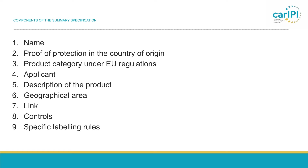There is a section on proof of protection in the country of origin, because international GIs always have to be protected already in the country of origin. Then the product category under EU regulations, the applicant — usually the group applying for the GI — the description of the product, the geographical area from which the product originates, the link between the specificity of the product and its geographical origin, which is considered the most important part. The summary specification also has to contain information about controls — checks whether the product specification is being complied with — and, if applicable, specific labeling rules.